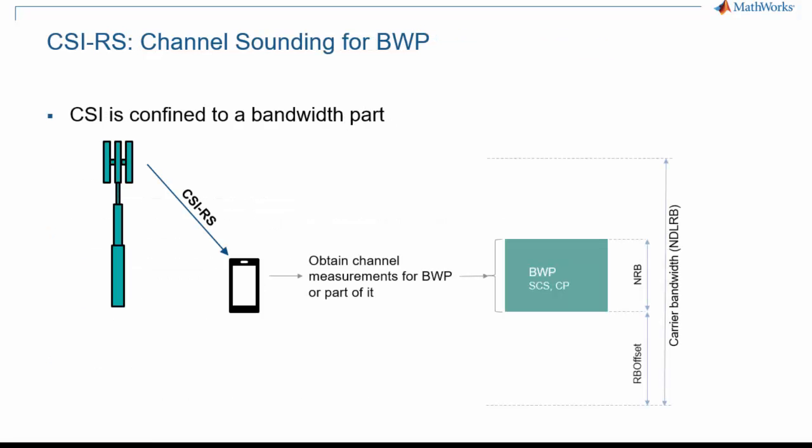CSI-RS are limited to a bandwidth part, but they are not limited to the subset of the bandwidth part that contains data for the UE, if there is even data transmission. Therefore, they provide information about the channel across possibly the whole bandwidth part, as opposed to DMRS associated with data transmission.